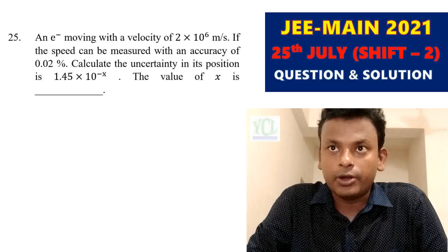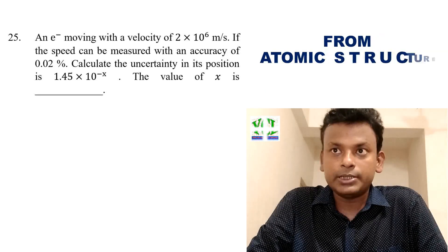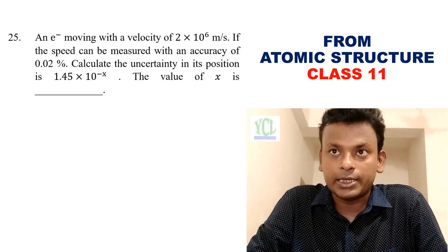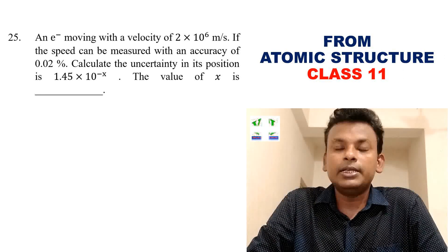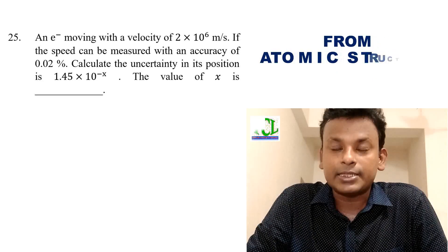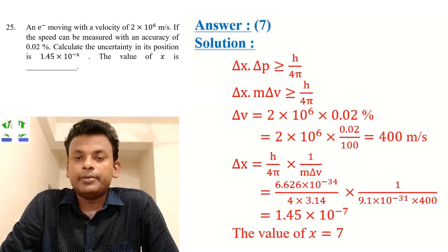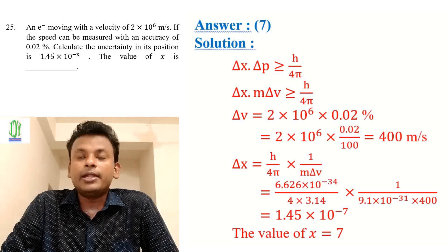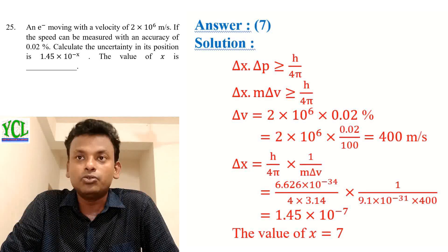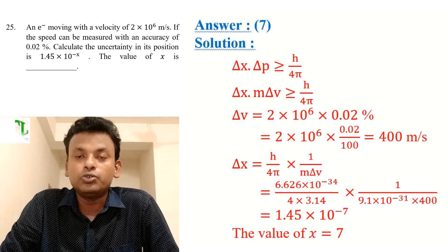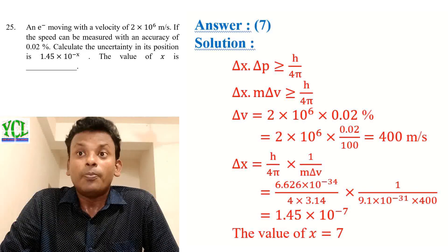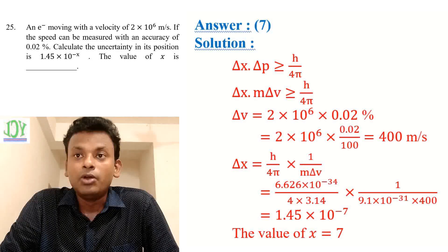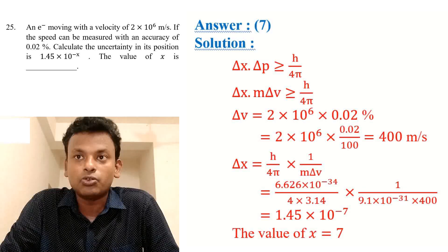Question 25: An electron moving at 2 × 10⁶ m/s, with speed measured to 0.02% accuracy; calculate uncertainty in position given as 1.45 × 10⁻ˣ. Using Heisenberg's uncertainty principle, Δx·Δp ≥ h/4π, where Δp = m·Δv. Δv = 2 × 10⁶ × 0.02% = 400 m/s. Substituting all values gives Δx = 1.45 × 10⁻⁷ m. So x = 7.